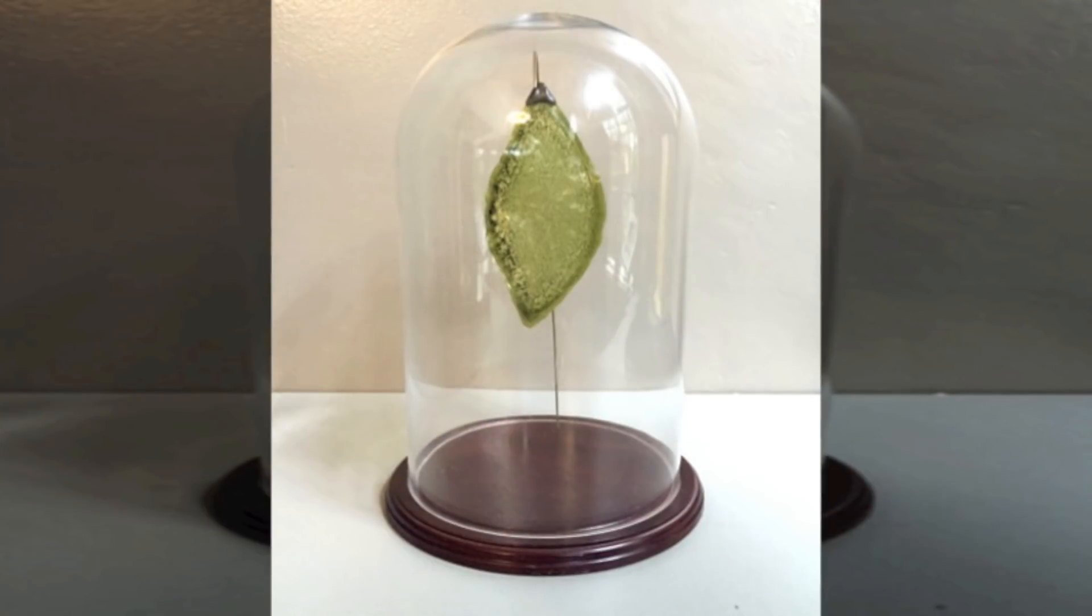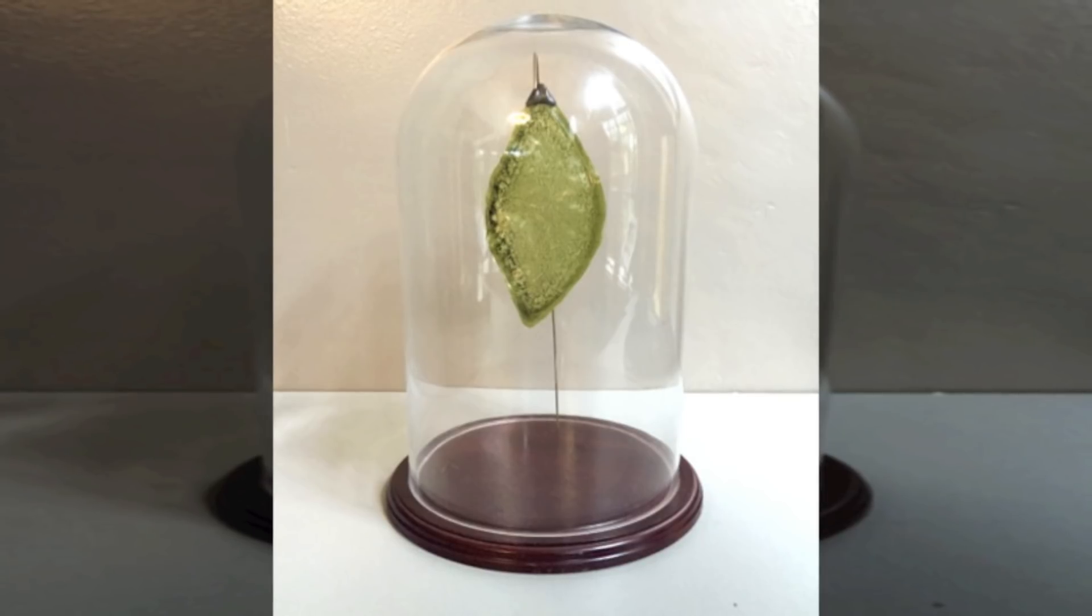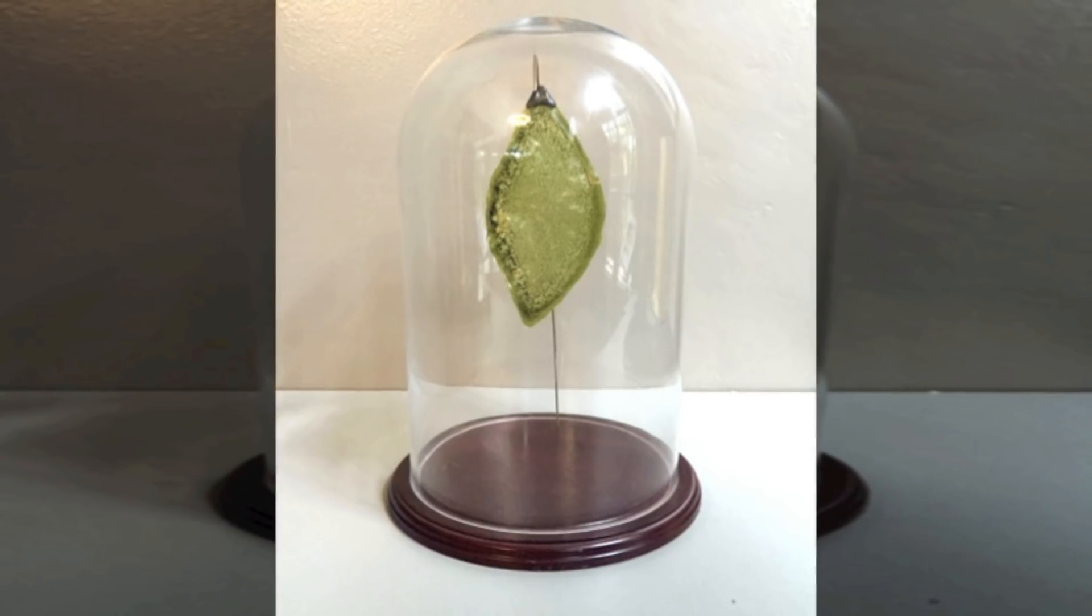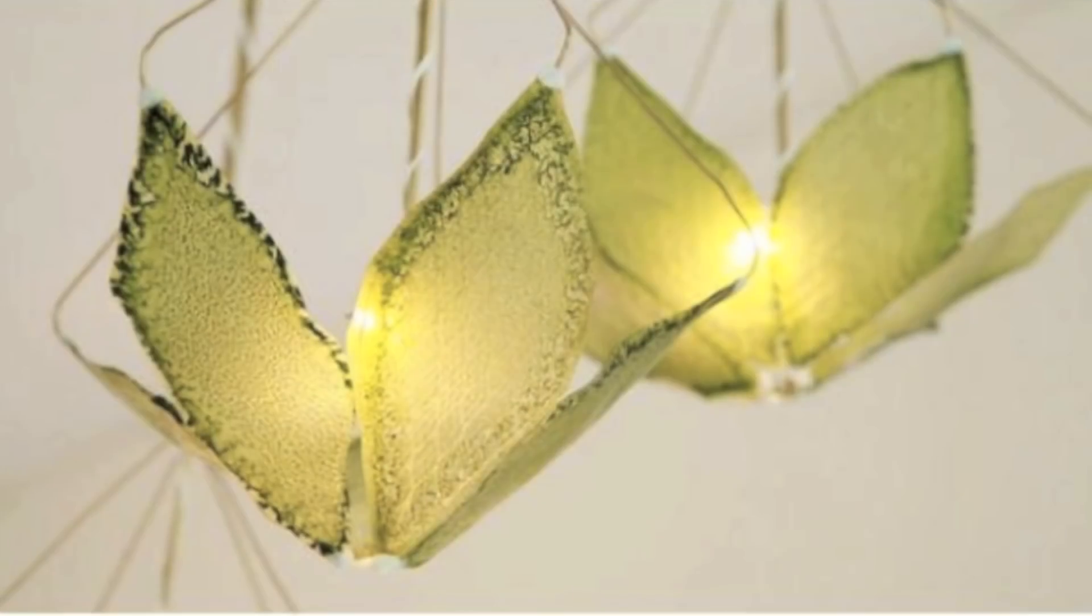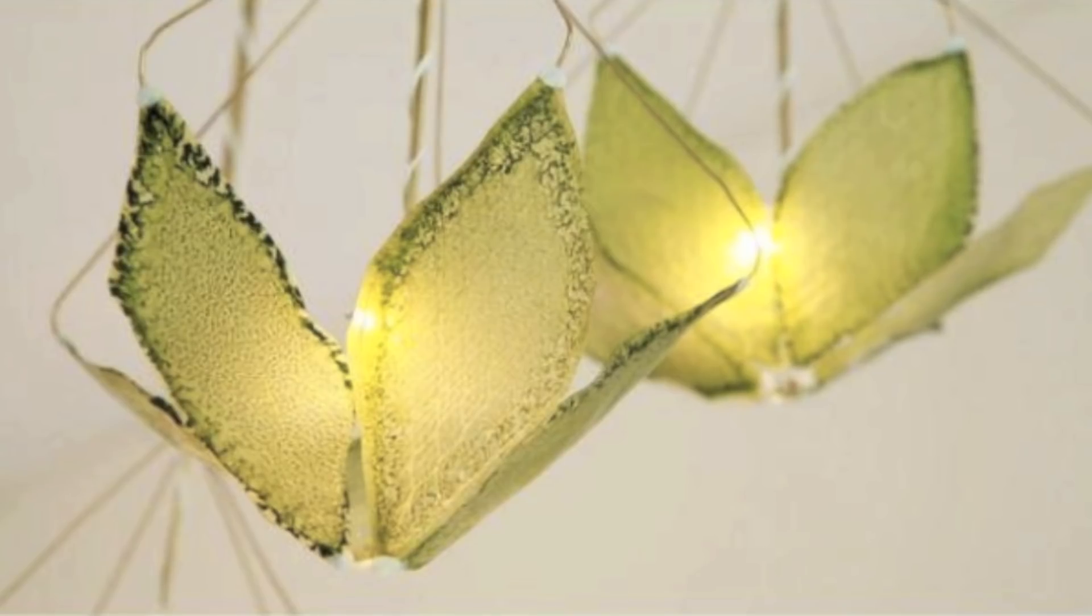For now, the best means of generating oxygen in space remains electrolysis, a process which uses electricity to split water into hydrogen and oxygen. The electricity is sourced from solar panels strapped on the spaceship or space station.